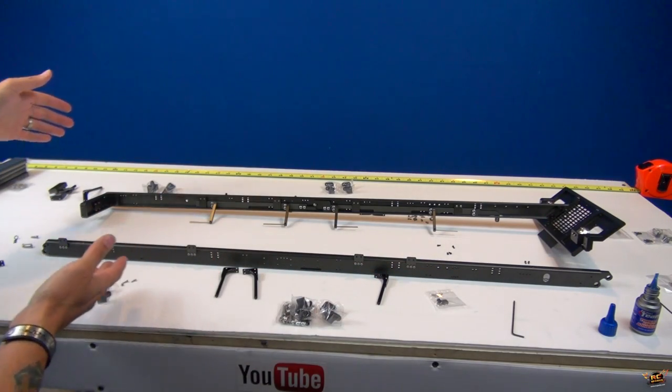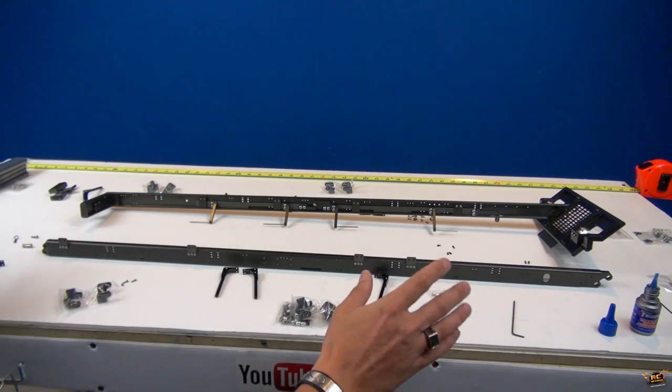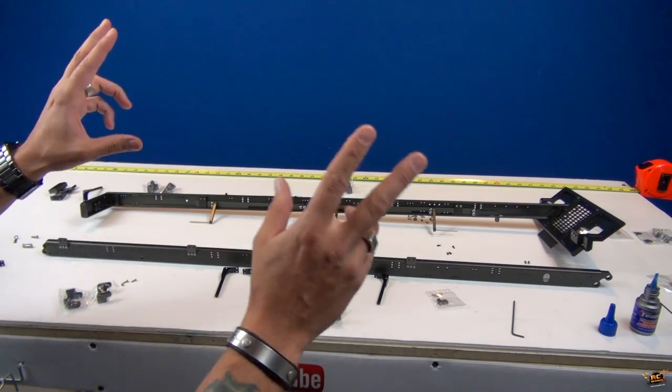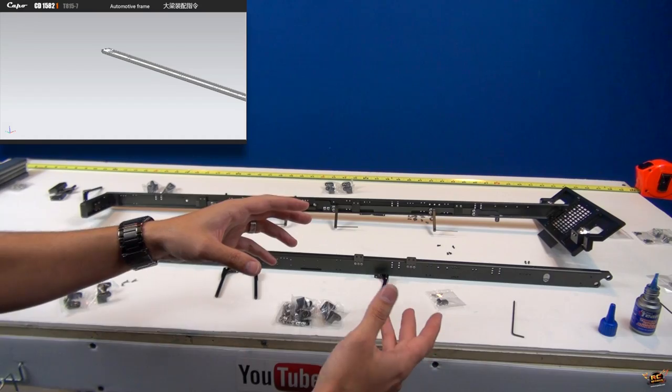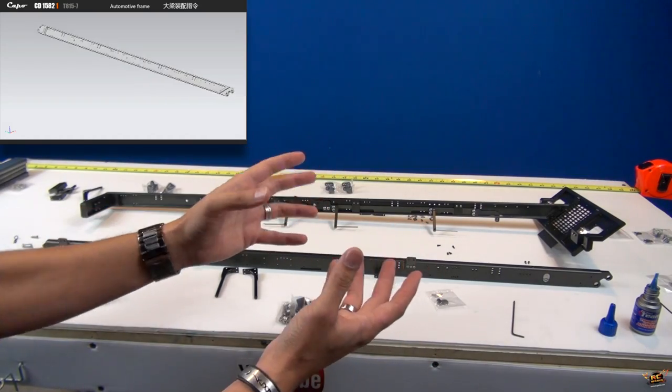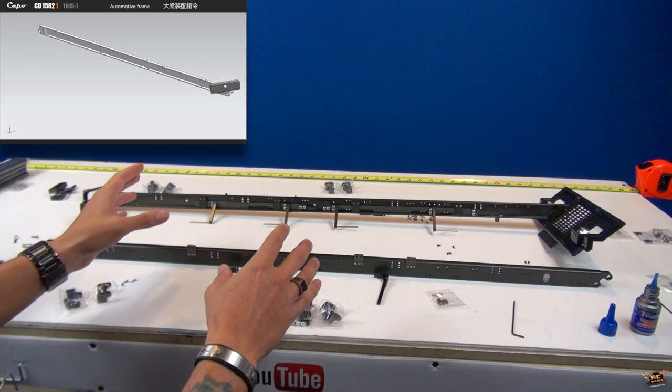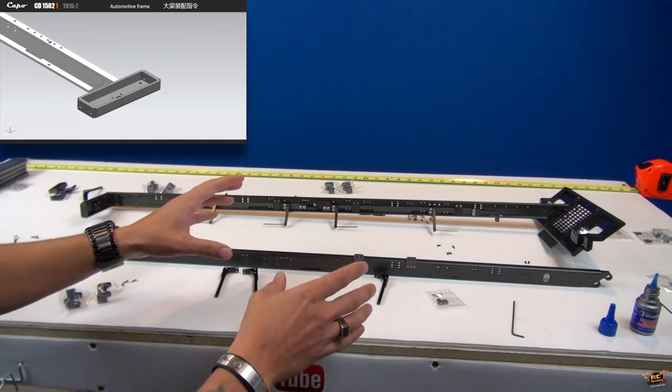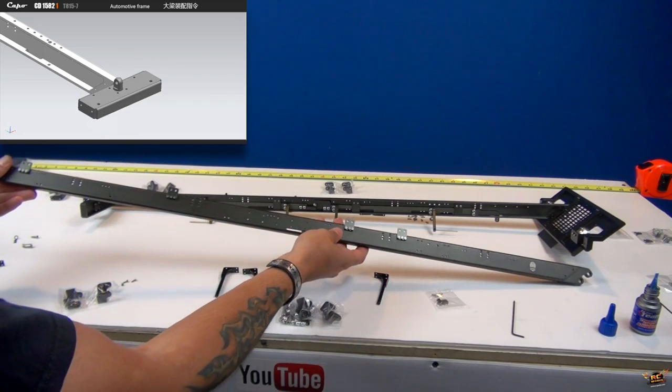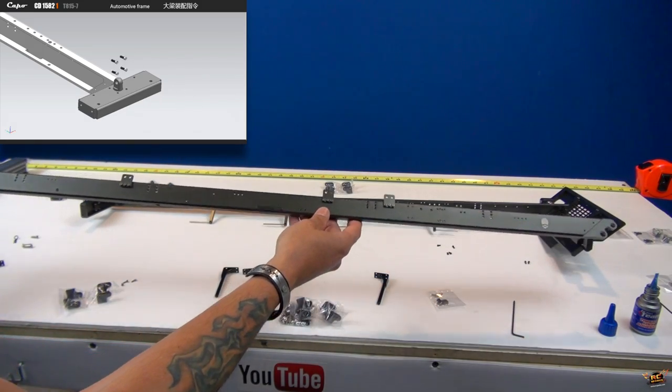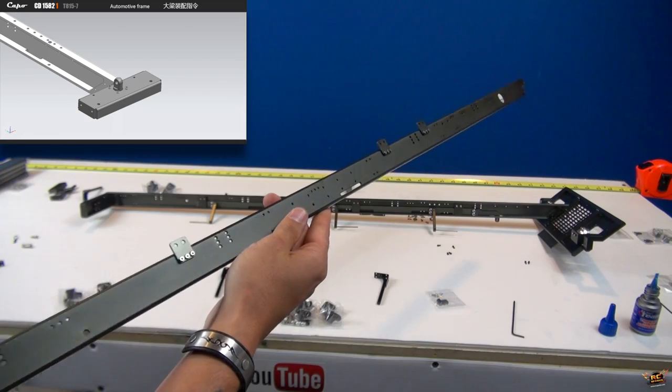Now I've already laid out the frame rails and yes, I've moved ahead and I'm not doing a lot of building on camera. Number one, because the instruction book, the CAD drawing itself, the engineering drawings that we've seen in the other videos that I've been doing about the Capo 8x8 certainly do a good job of building it.